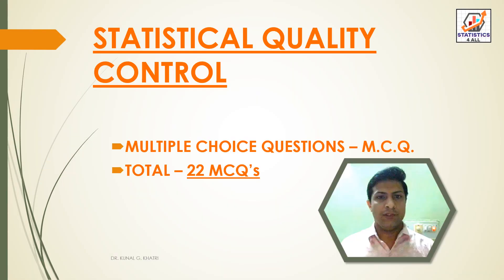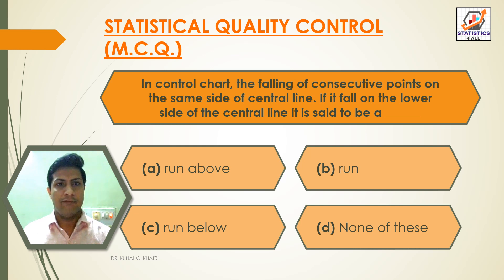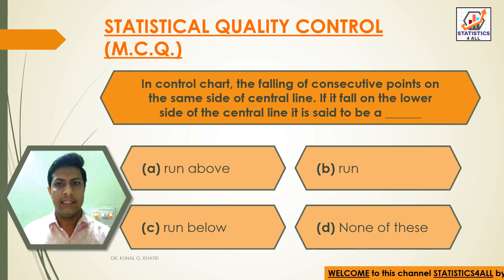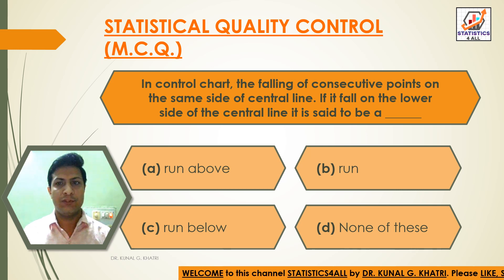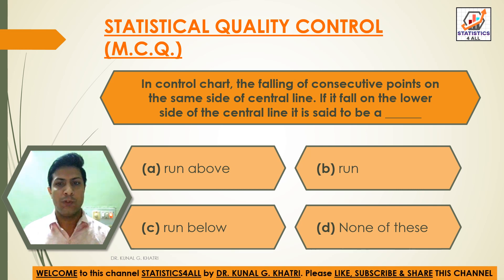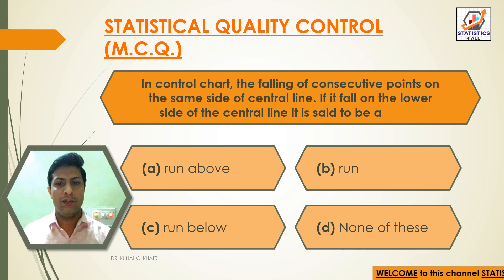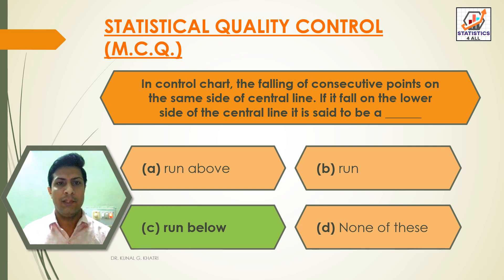Statistical Quality Control: Multiple Choice Questions — 22 MCQs total. Question 1: In a control chart, the following of consecutive points on the same side of the center line — if it falls on the lower side of the center line, it is said to be: Option A: Run above, Option B: Run, Option C: Run below, Option D: None of these. Answer: Option C — Run below.